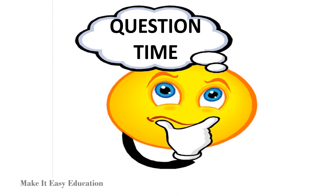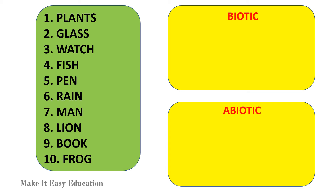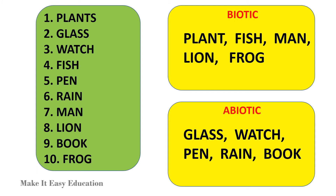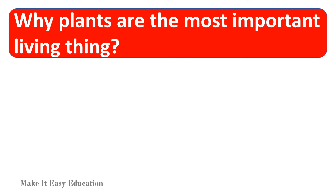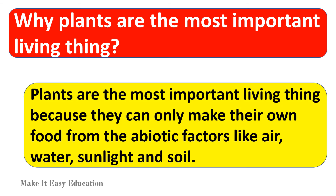Question time: Classify the following as biotic or abiotic factors. Why are plants the most important living thing? Plants are the most important living thing because they can only make their own food from abiotic factors like air, water, sunlight, and soil.